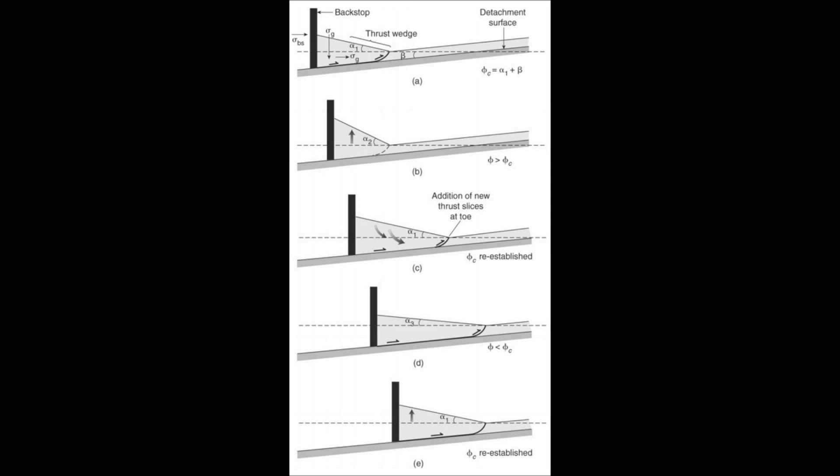In figure D, if the surface slope becomes too small, thrusting at the toe stops and the wedge thickens by penetrant strain or out-of-sequence thrusting, as in figure E. Internal thickening increases the topographic slope angle until the wedge achieves the critical taper angle again, and the wedge again starts sliding towards the foreland with new thrusts forming at the toe.